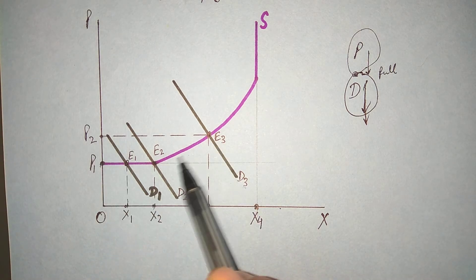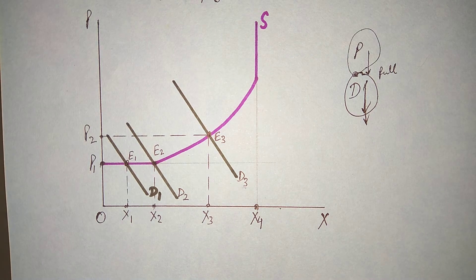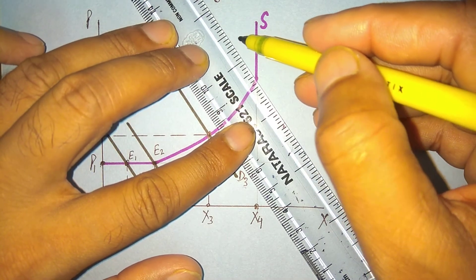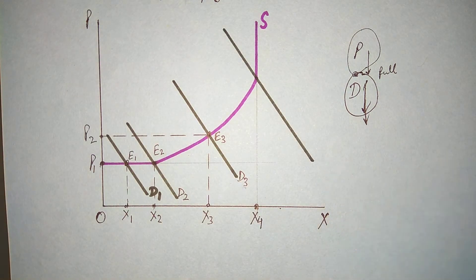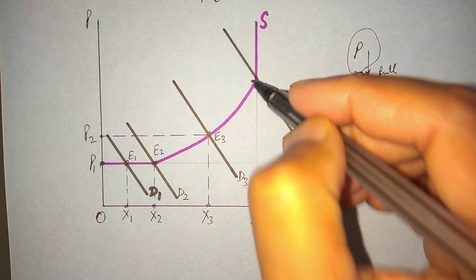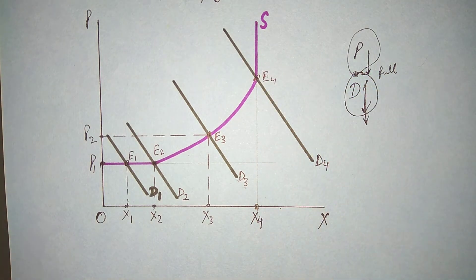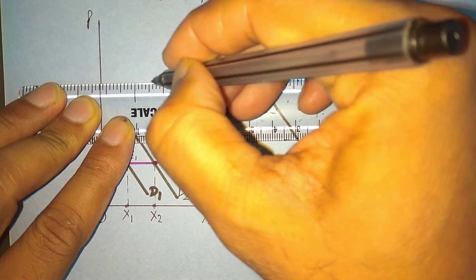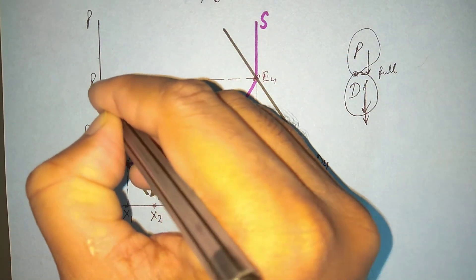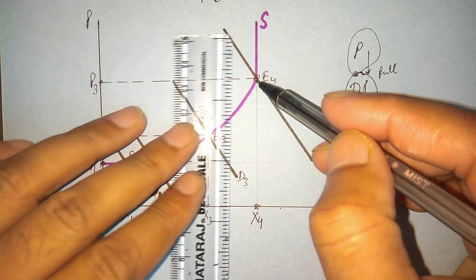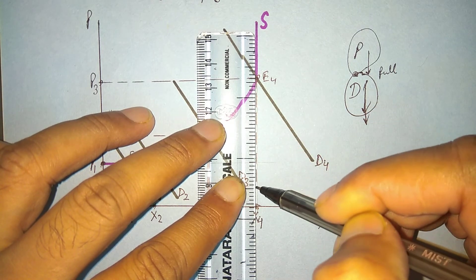But this increase in price is not proportionate to demand, because supply is also rising a little. And if we further increase demand up to the full employment level — suppose D4 — equilibrium quantity is X4 at E4. Price rises further from P2 to P3, and this is the equilibrium quantity representing our full employment level.